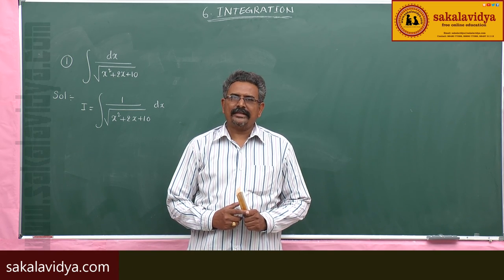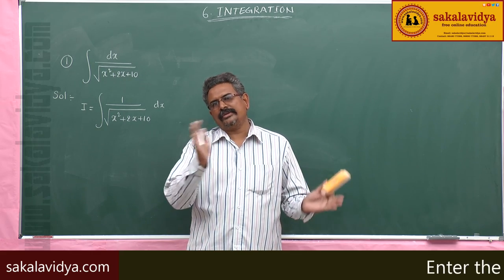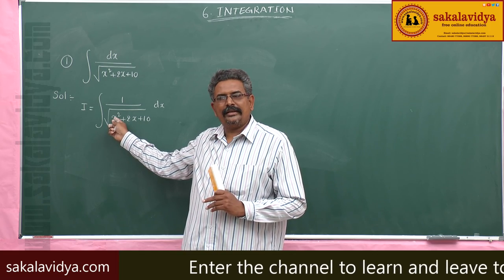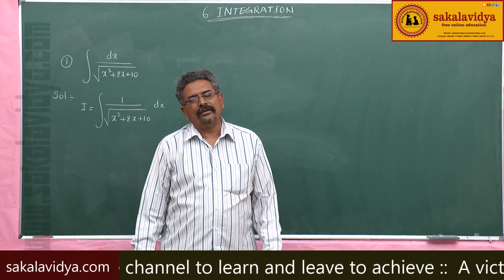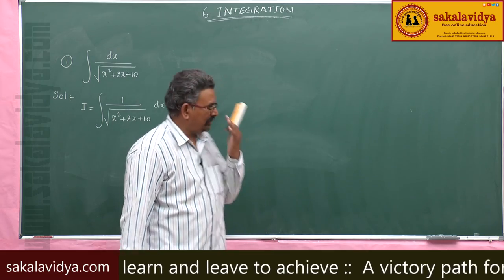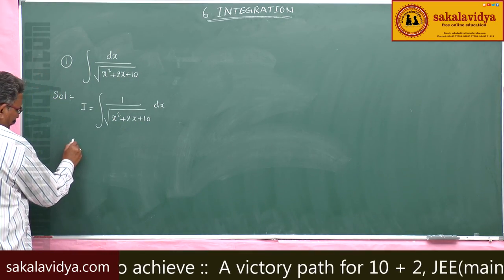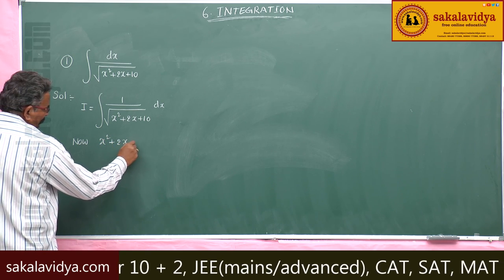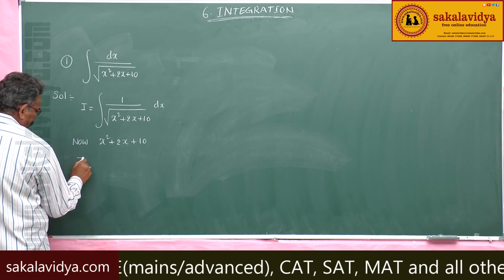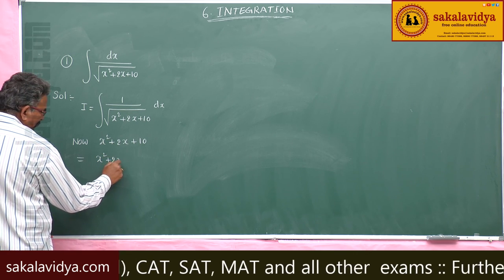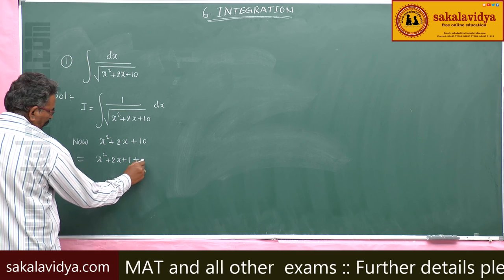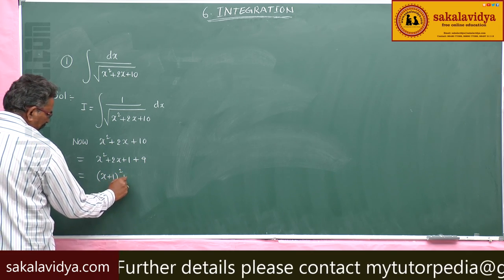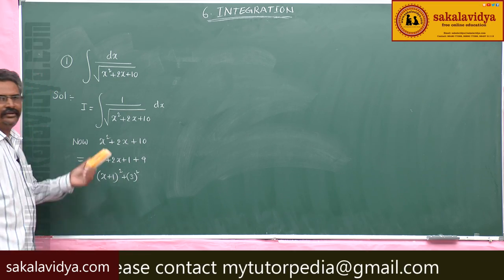Now, ax squared plus bx plus c should be reduced to the form a times (x plus alpha) whole square plus beta, since the coefficient of x squared is 1, which means a is greater than 0. Consider x squared plus 2x plus 10, which can be written as x squared plus 2x plus 1 plus 9, that is (x plus 1) whole square plus 3 squared.